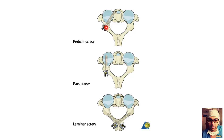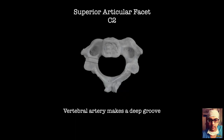A pedicle screw goes across the pars and reaches the pedicle of C2. A pars screw is in the pars, which is also a shorter transarticular screw. A laminar screw goes into the lamina of C2. The C2 lamina is quite thick and is the largest lamina in the cervical spine.